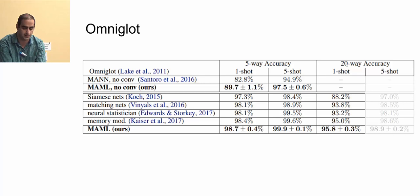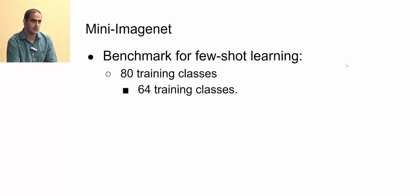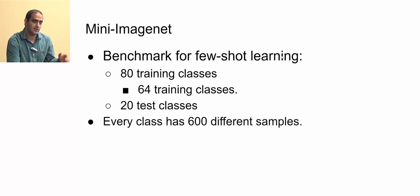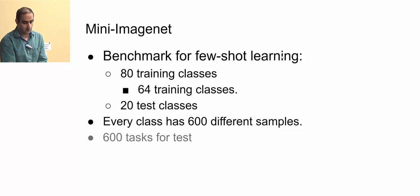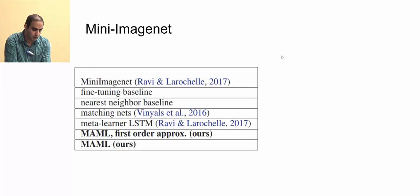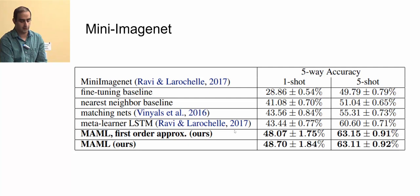MAML was also applied to Mini ImageNet, another well-known few-shot learning benchmark with 64 training classes, 16 validation classes, and 20 test classes, each with 600 examples. We generate 600 tasks for testing. The images are more complex than Omniglot, and MAML achieves very good five-way accuracy on both one-shot and five-shot settings.